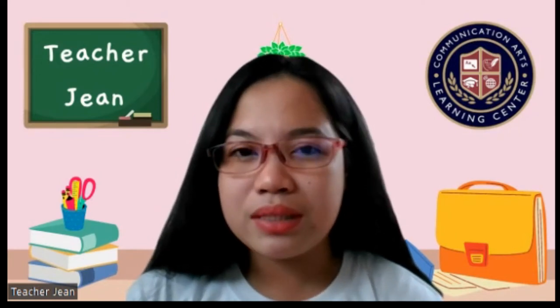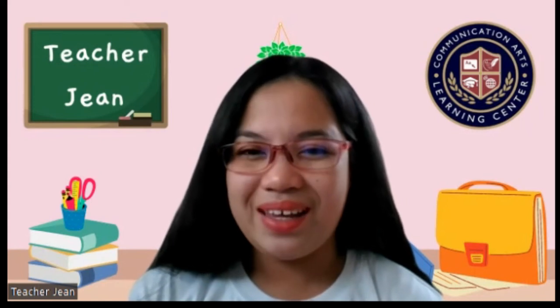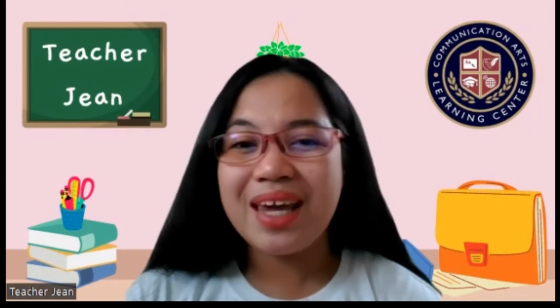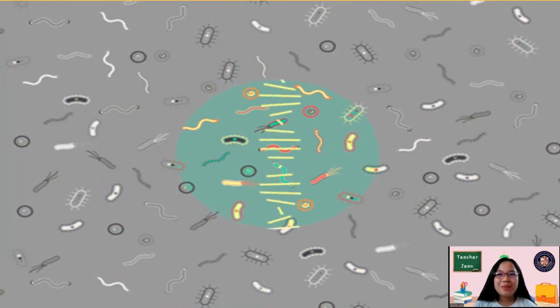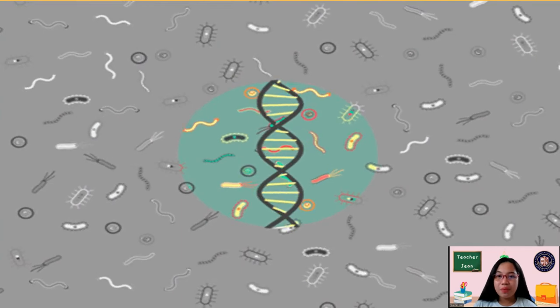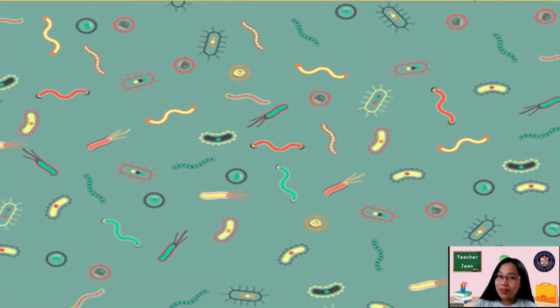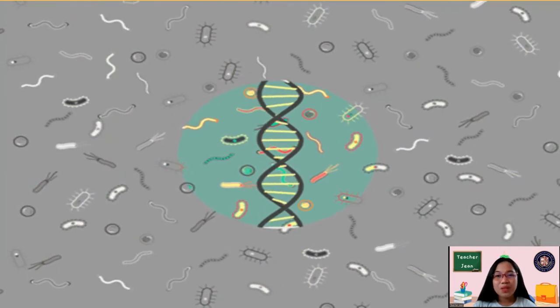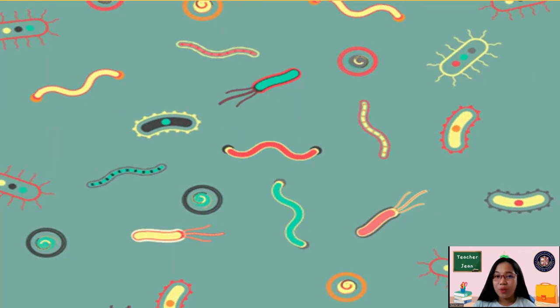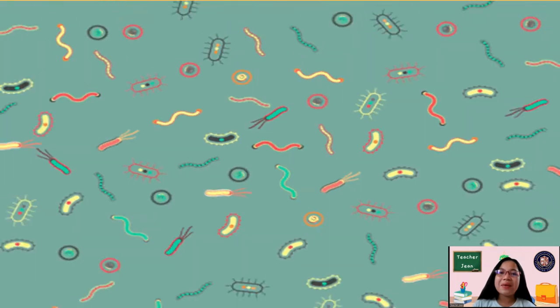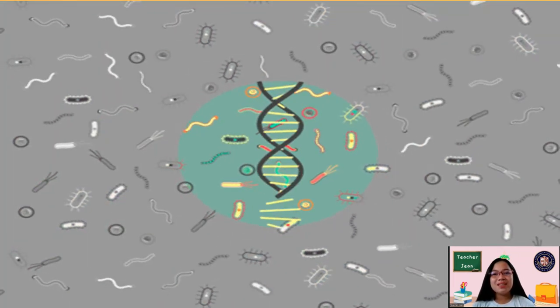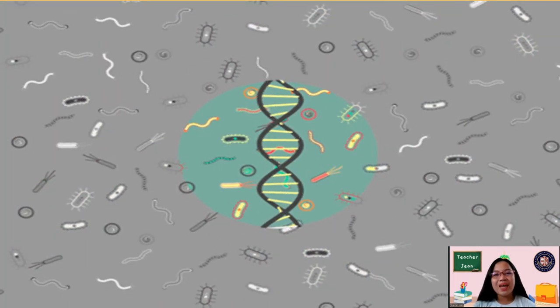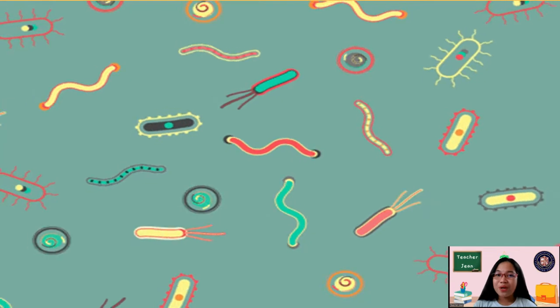They are very, very little — you cannot see them with your naked eye. For you to be able to see them, you need to use a microscope. There are a lot of microorganisms around us. Some are good, and some are bad. The bad ones are the main reason why we have communicable diseases. These microorganisms can simply be called germs or pathogens.